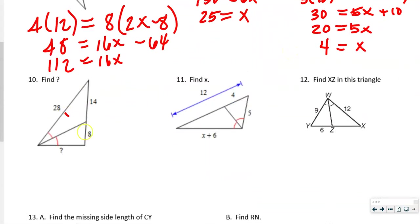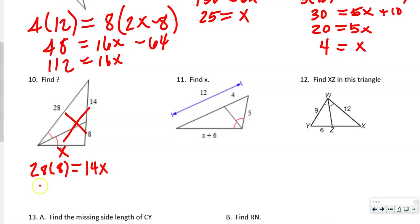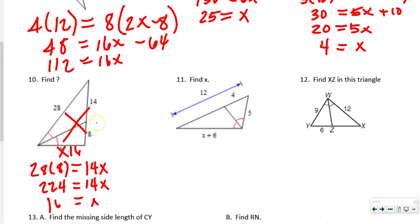Similar concept — cross-multiply. 28 times 8 = 14x. 28 times 8 is 224, divided by 14 gives x = 16. You can verify: 16 over 14 equals 28 over 14 — wait, that checks out when you compare the ratios properly.